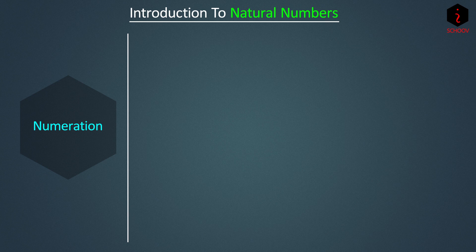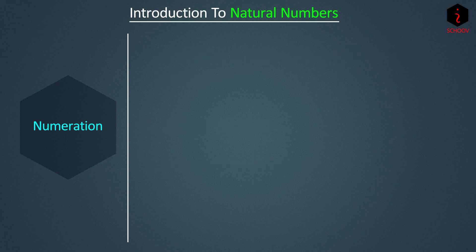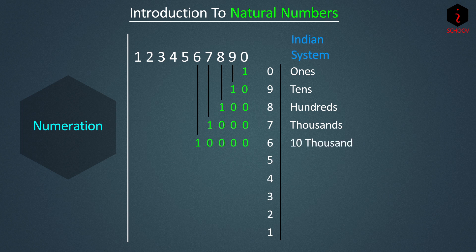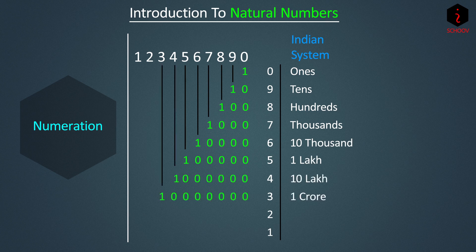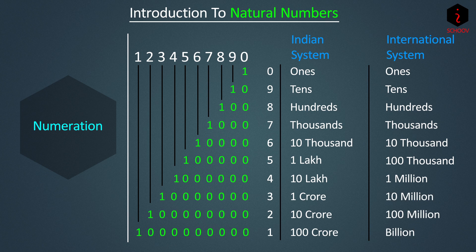Next is numeration. When we write a number as a numeral it is called a numeral; writing it in words is called numeration. There are two kinds: the Indian system and the International system. Take a ten-digit number. We know ones, tens, hundreds, thousands. In the Indian system, after thousands comes ten thousand, then lakh, ten lakh, crore, ten crore, hundred crore. In the International system it goes: ten thousand, hundred thousand, million, ten million, hundred million, billion, and so on.